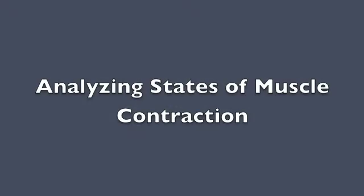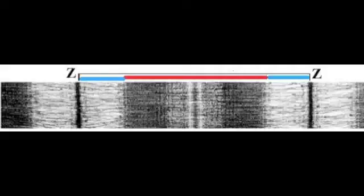Analyzing states of muscle contraction. In a relaxed muscle fiber, the sarcomere can be seen with C lines which are far apart. There is a distinct light band of actin only, shown by the blue lines here, and a darker myosin band shown by the red line.